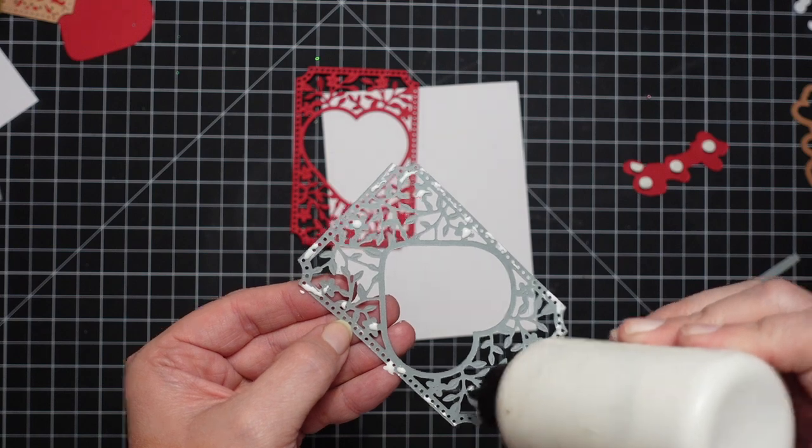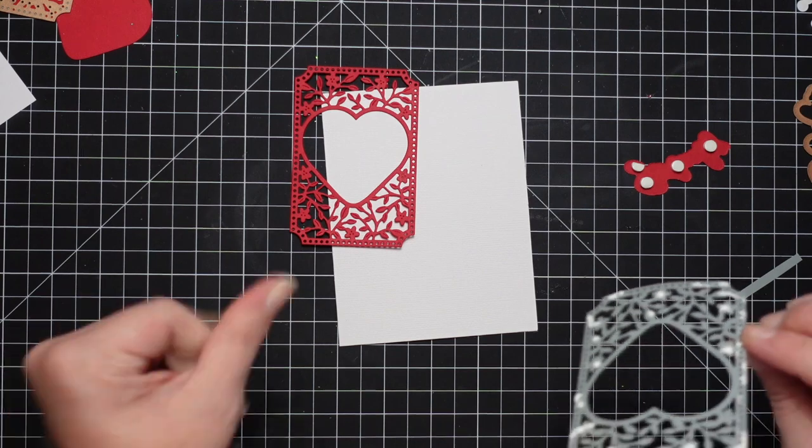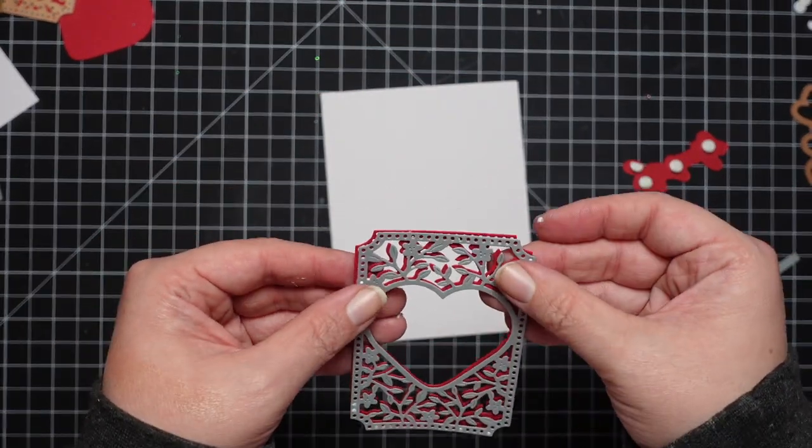And those card bases do not have texture to them. If you get the Spellbinders kits, the card bases have a texture. Those that I just showed you are smooth.